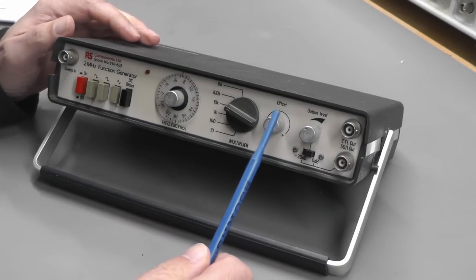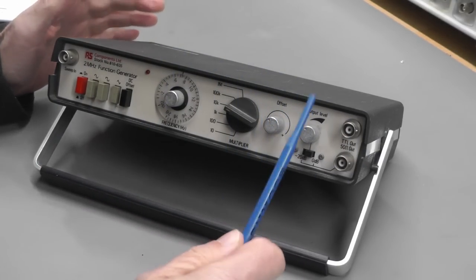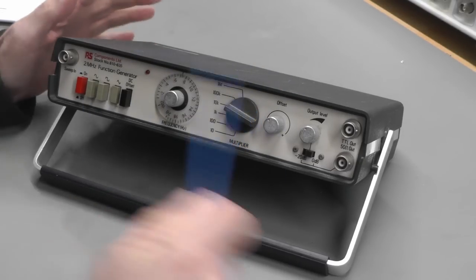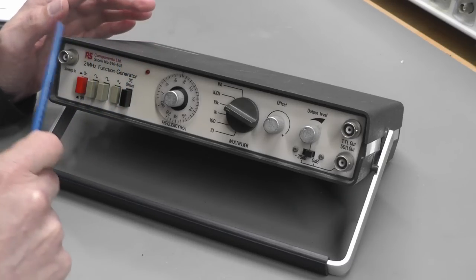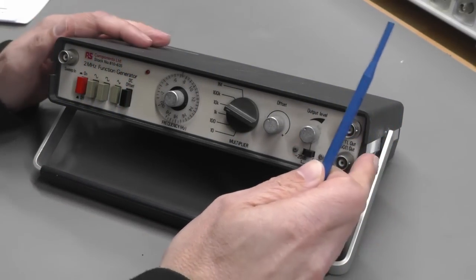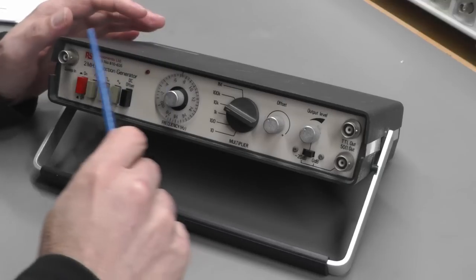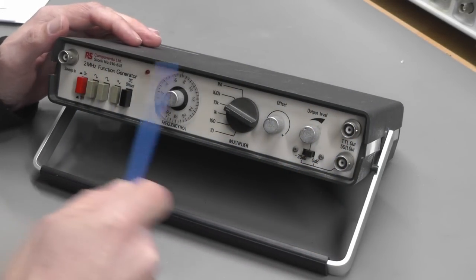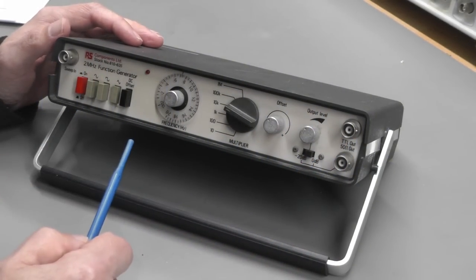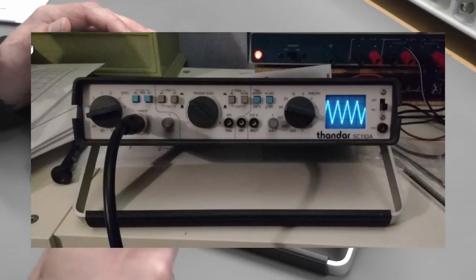I used to use one of these back in the day. Found this one on eBay marked as faulty and couldn't resist picking it up. It's badged as an RS components unit, but I know these are actually Thandar devices. Thandar used to make a complete range of devices including a portable oscilloscope in exactly the same case. If I could find one of them, I'd love to add it to the workbench.